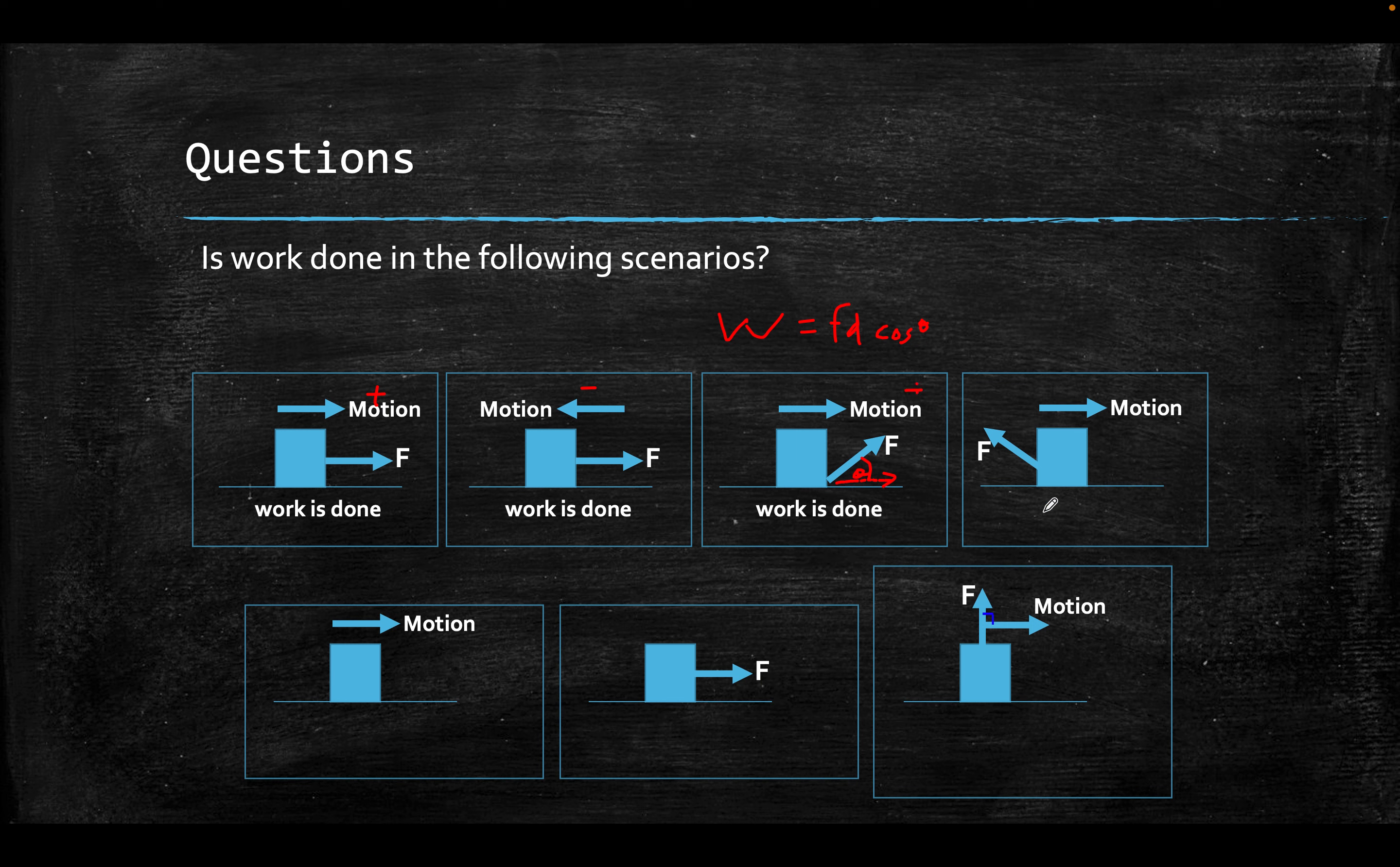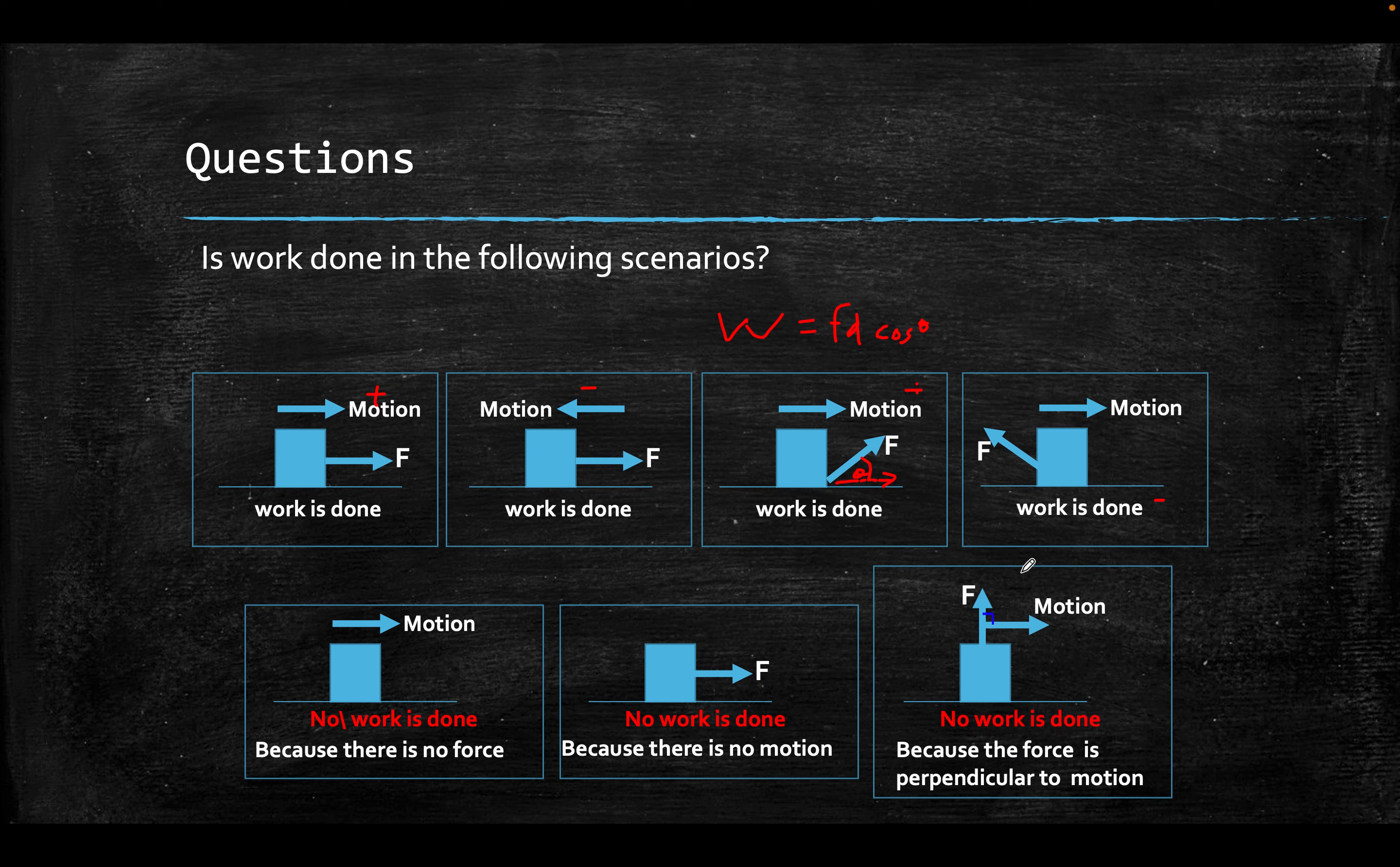Over here, there's a motion, but no force. So that means no work. There is a force, but it's not moving. No work. No force, no work. Perpendicular, up and down, will never affect the horizontal. They are independent of each other, so that means also no work.